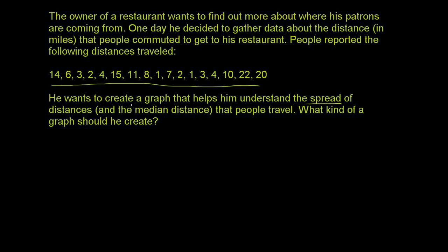You can plot this data in many different types of graphs, but they tend to depict things in different ways. A line graph shows a trend over time, or one variable with respect to another — but he's not interested in a trend here. A bar graph is good for bucketing things and seeing how those buckets are performing, but that's not exactly what he wants. A pie graph shows how things make up a whole, which is also not what he wants.